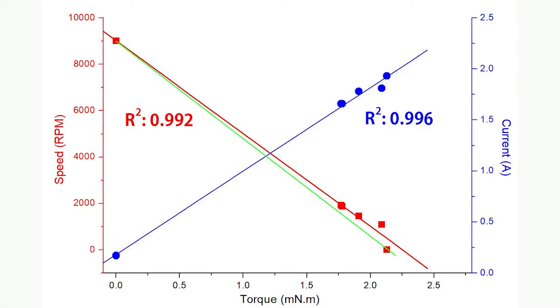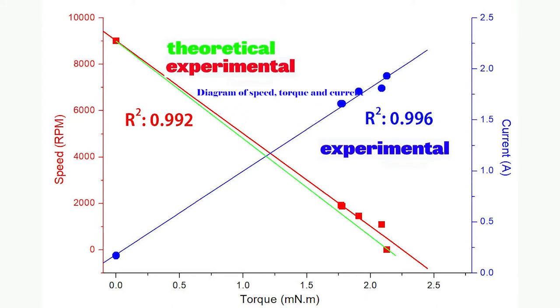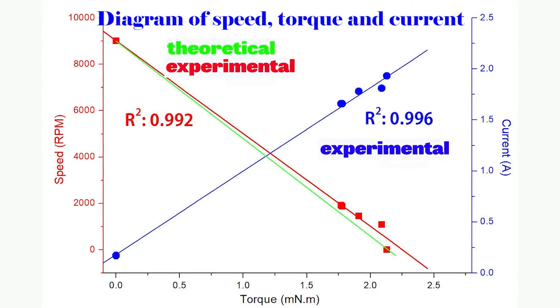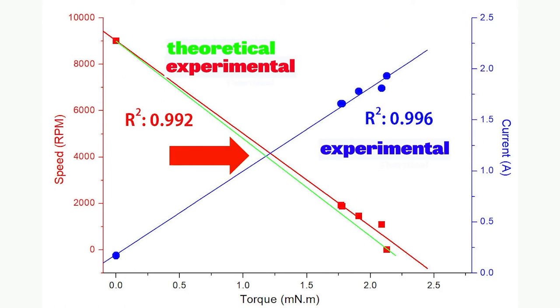This is the experimental results of speed, torque, and the current diagram. The theoretical result between speed and torque is depicted using the green line. The experimental result is plotted using a red square dot. A linear fit is plotted using the red line. The coefficient of determination R square, which represents the goodness between experimental and theoretical, is listed also. Well, the more R square near the 1 or 100%, the better is the experimental result, the more reliable of the experimental results.